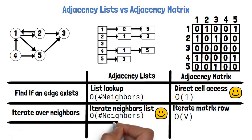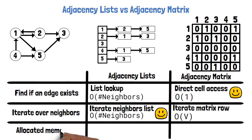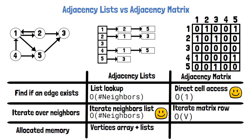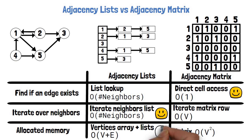Lastly, let's discuss the memory each representation requires. In the adjacency list, we allocate the array of size V and the lists. The total number of list cells equals the number of edges E, so the total memory is O(V + E). For undirected graphs the big O notation is the same, since we only multiply the cell count by 2. For the adjacency matrix, we allocate a V×V matrix, costing O(V²). So adjacency lists are more memory-efficient, unless the graph is very dense with edges.